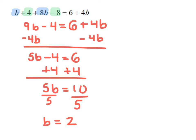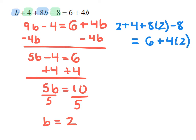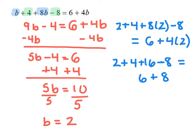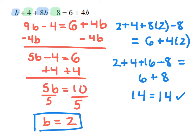Now I have to check my answer by plugging everything back in: 2 plus 4 plus 8 times 2 minus 8 equals 6 plus 4 times 2. Simplifying the left side gives 2 plus 4 plus 16 minus 8, and the right side gives 6 plus 8. Combining terms on both sides gives 14 equals 14. Since this is true, b equals 2.